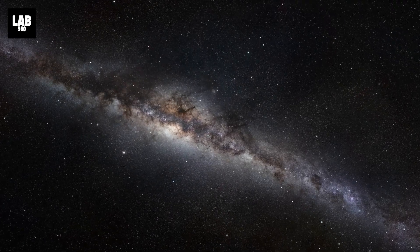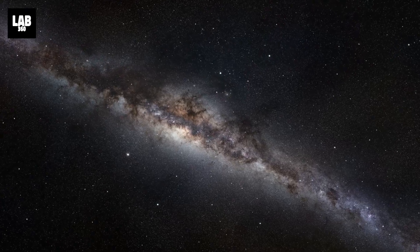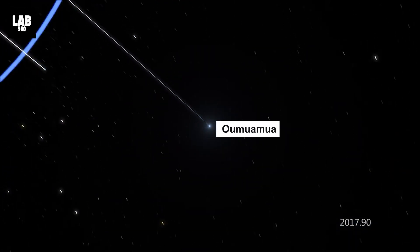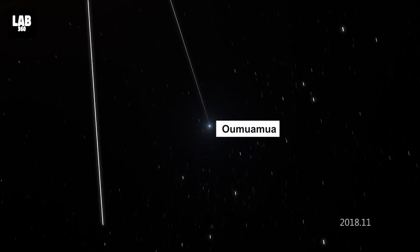Our own solar system doesn't shed so many Oumuamua-like objects. In addition, Oumuamua's motion is roughly coincident with the average motion of material in our patch of the Milky Way galaxy, a kinematic space known as the local standard of rest. Indeed, that's why the object's system of origin has been so hard to pin down.